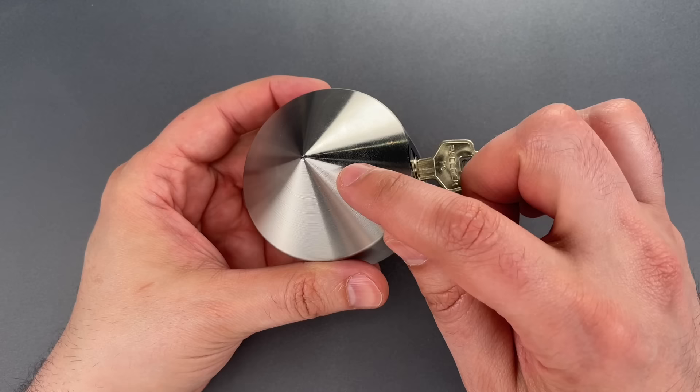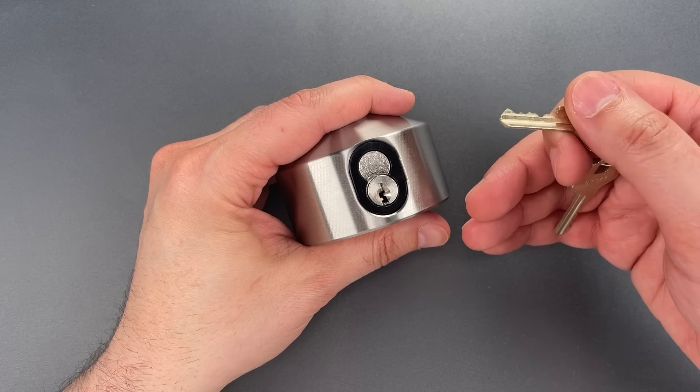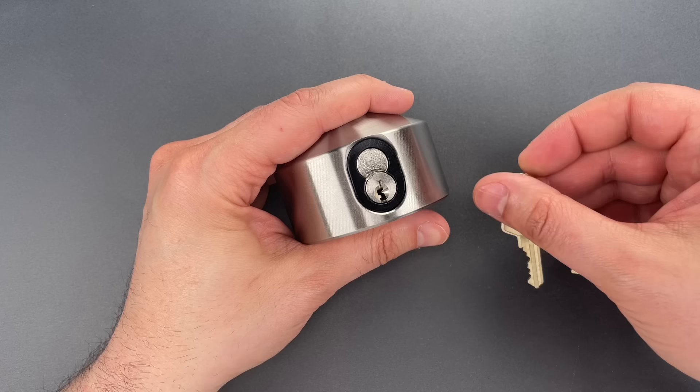The second non-standard feature is the use of PackLock's universal cylinder which is user swappable such that tasks like re-keying and keying alike can be accomplished easily by the consumer. But more interesting to me is the way this core is mounted in the lock.